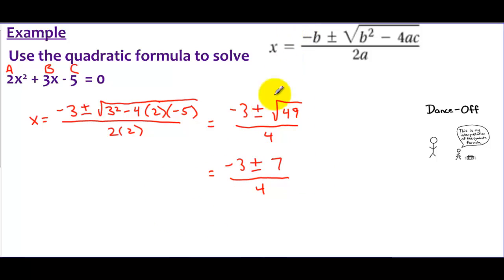Here's where that plus or minus comes in: negative 3 plus 7 over 4—that's one. And then I'm going to write a separate one: negative 3 minus 7 over 4. I'm going to actually get two answers out of this, and we should, because in all of these quadratics we've been getting two answers.